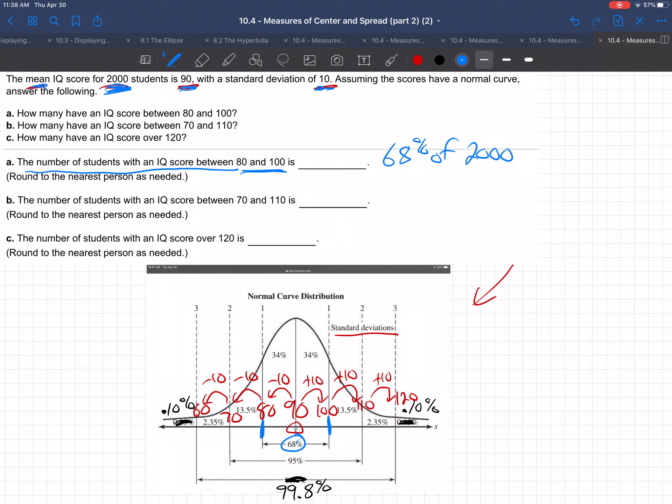So that would be 68% of the 2,000 students, right? Because there's 2,000 total students in this study. What is of always? This is .68 of is times. In math, of is always times.